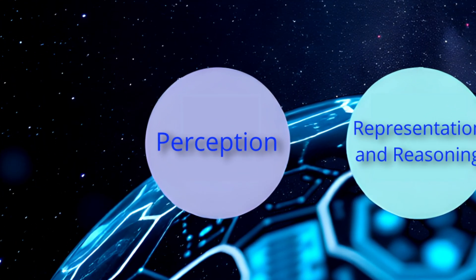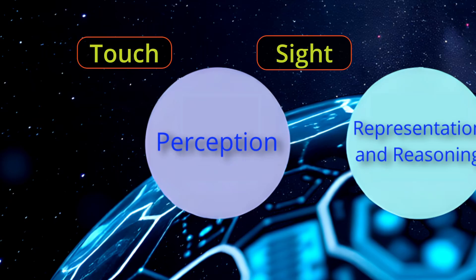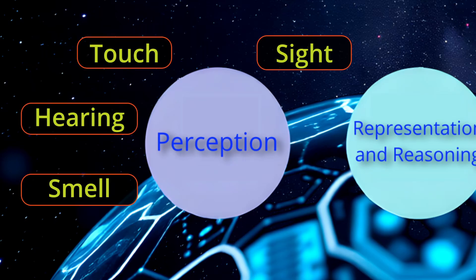Perception. Humans use their five senses to perceive the world around them. Touch, sight, hearing, smell, and taste.